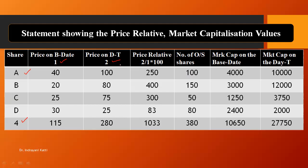The price relative column is calculated as: price on date T divided by price on base date, multiplied by 100. For script A: 40 divided by the base price, into 100. For script B: 80 divided by 20, into 100, giving 400. For script C: 75 divided by 25, into 100, giving 300. For script D: 25 divided by 30, giving 80. The total of the price relative column comes to 1,033.